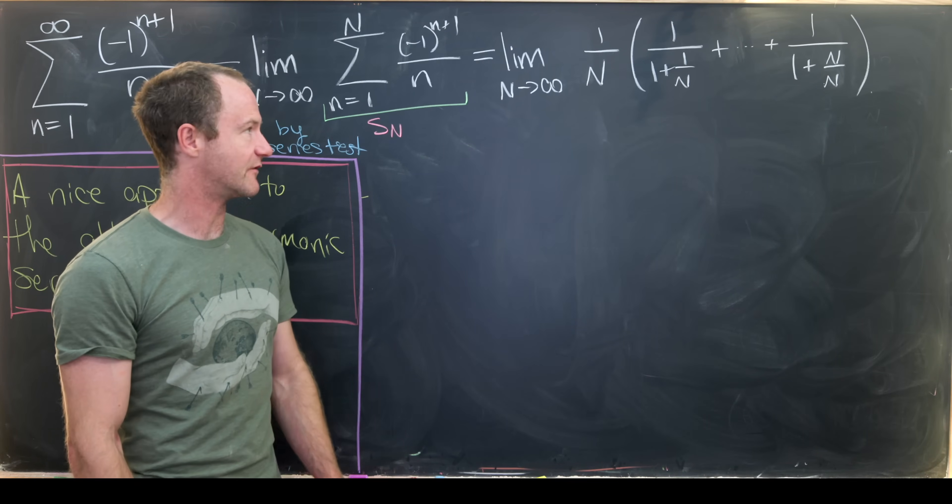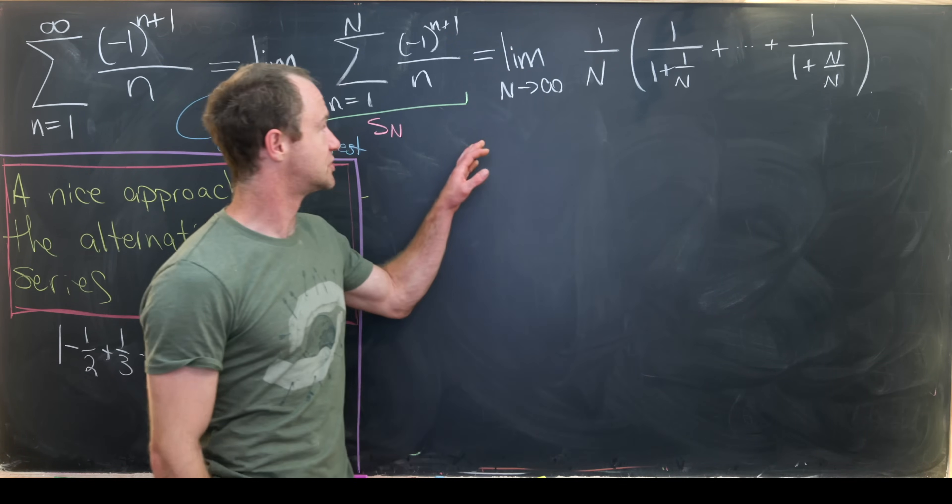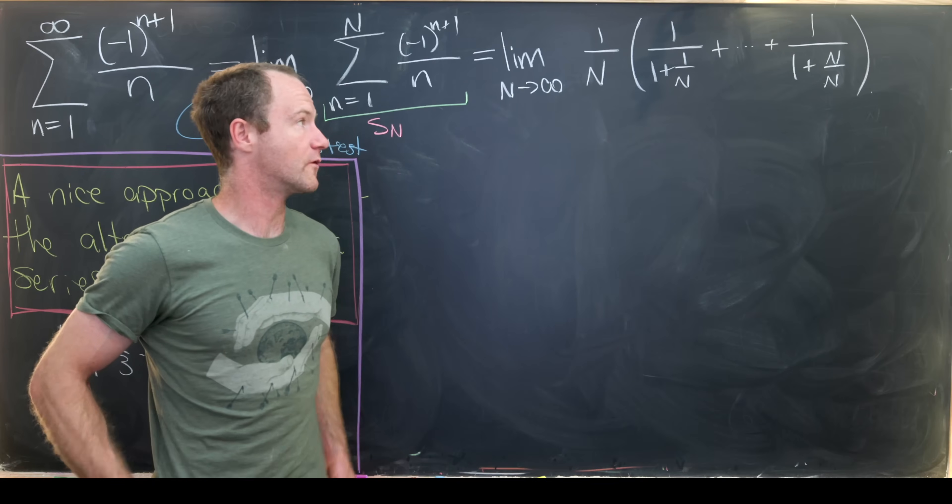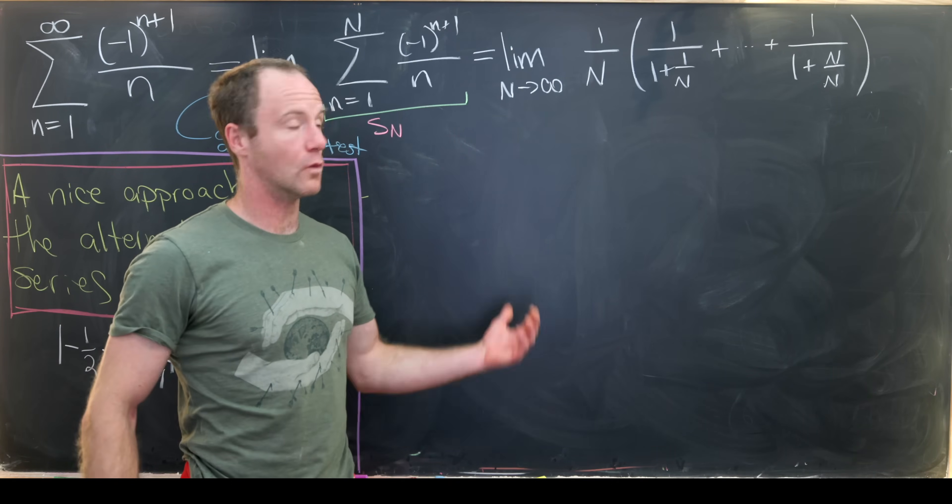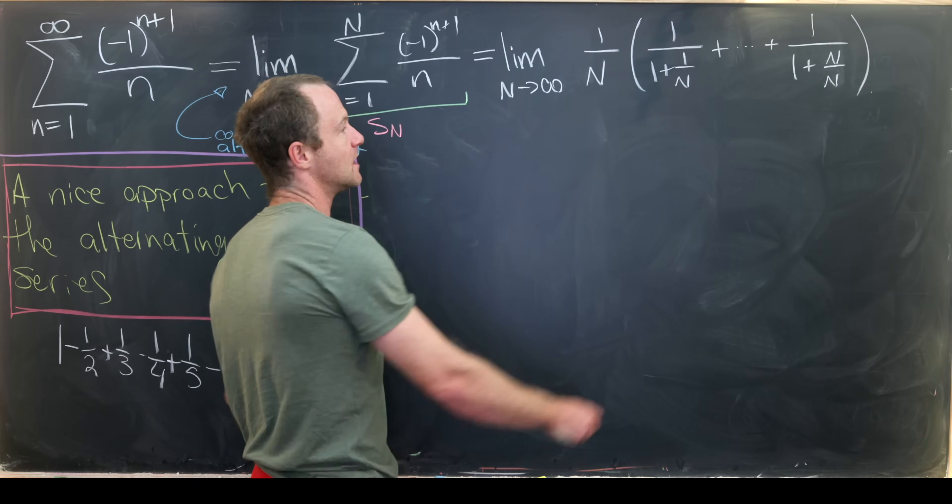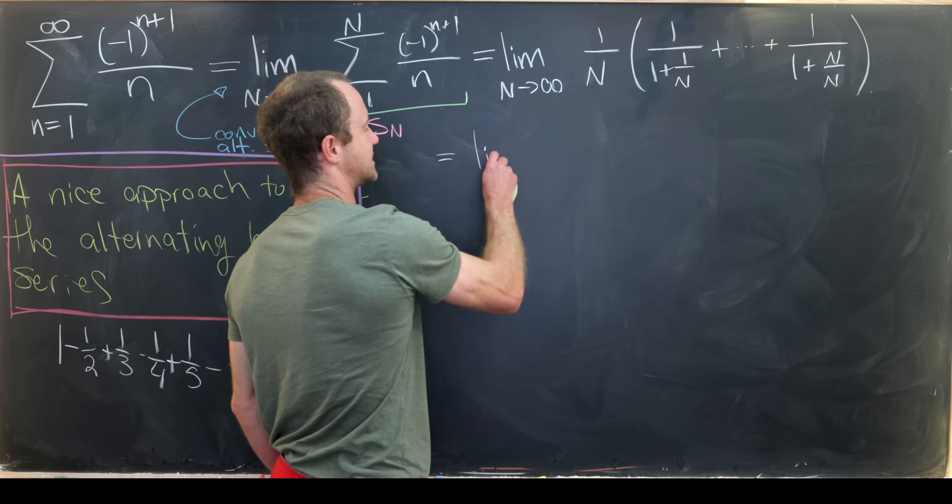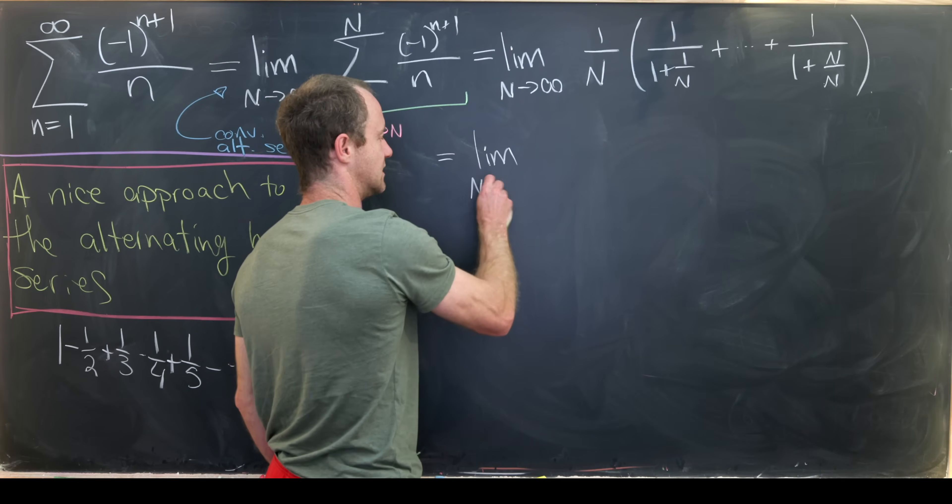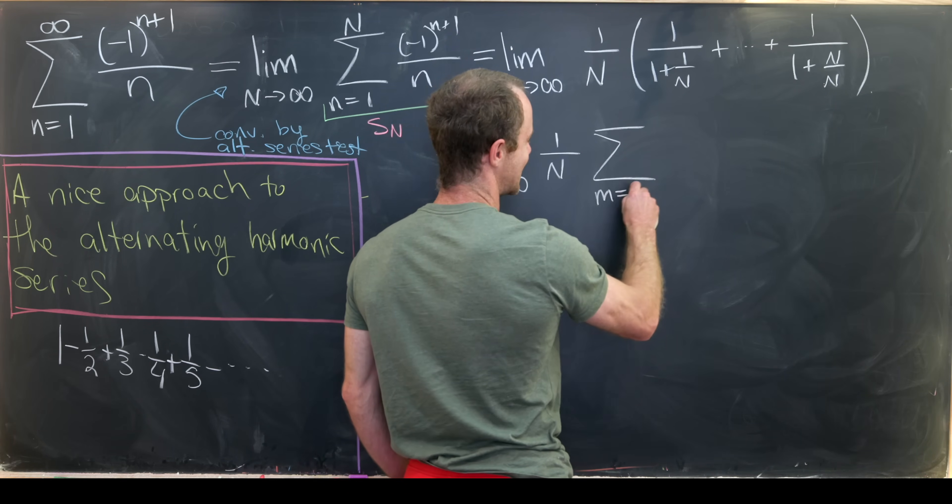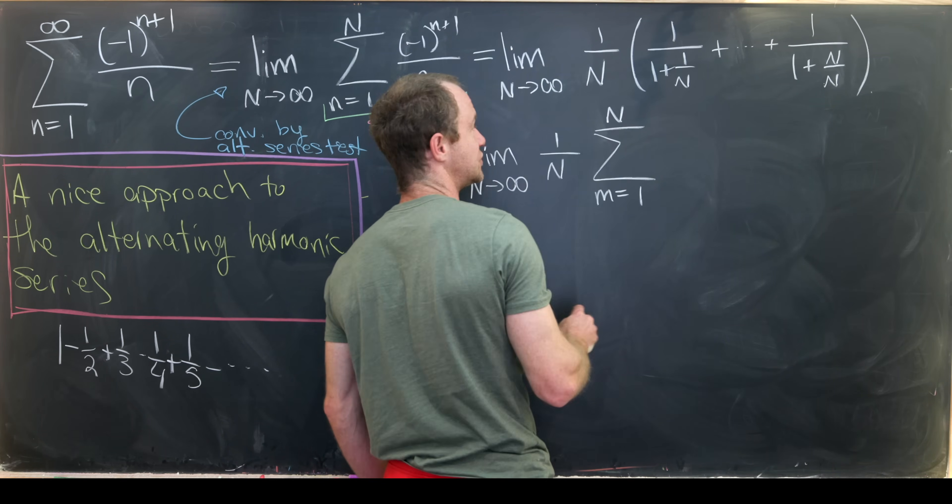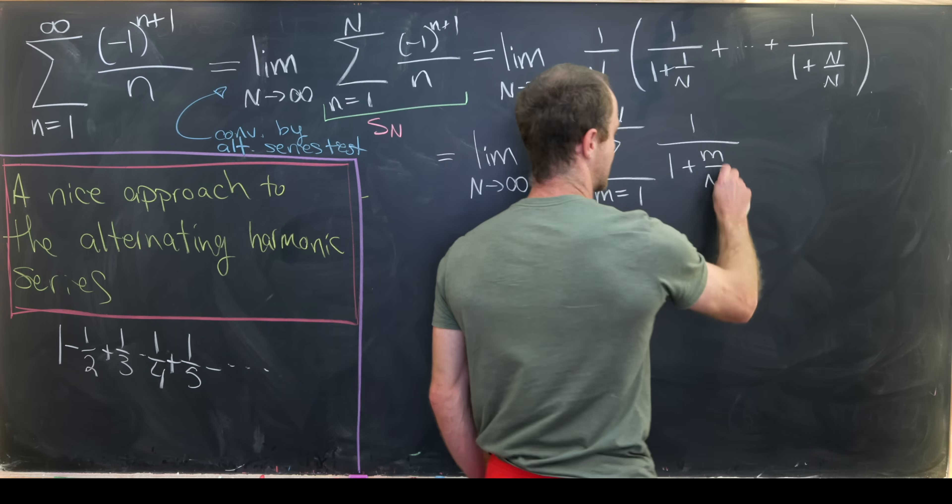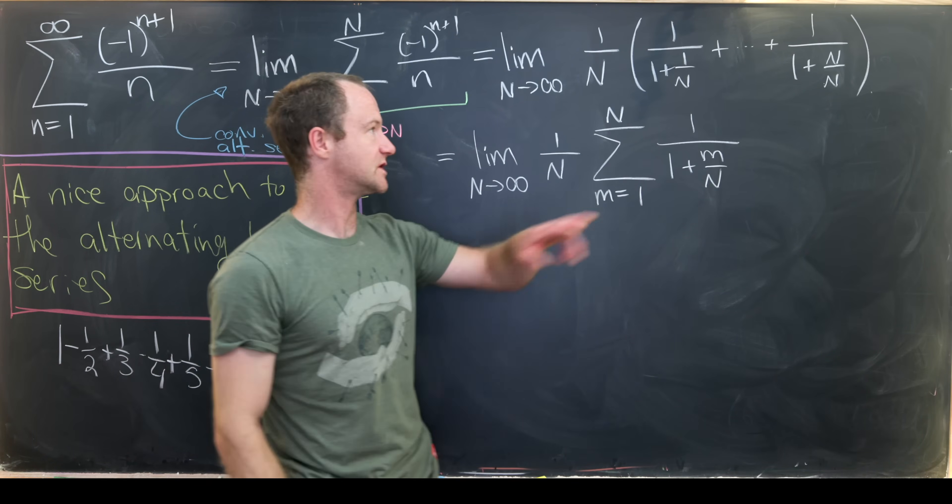So let's see what we have here. So our goal sum is equal to this limit as N goes to infinity of 1/N. And then we've got this 1/(1+1/N) plus 1/(1+2/N) all the way up to 1/(1+N/N). But that motivates us to rewrite this with summation notation. So this is going to be the limit as N goes to infinity. We have 1/N and then we have the sum as M goes from 1 to N of 1/(1+M/N).